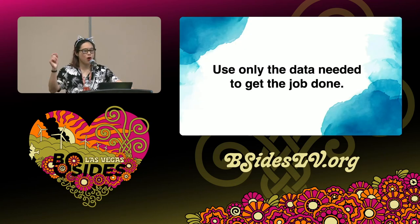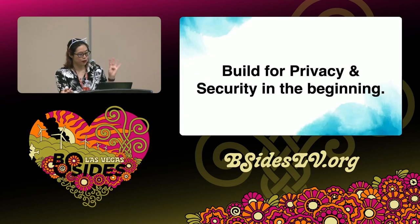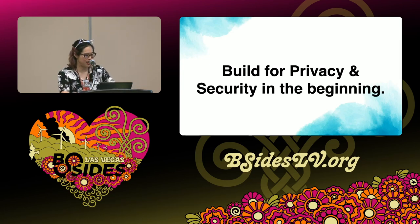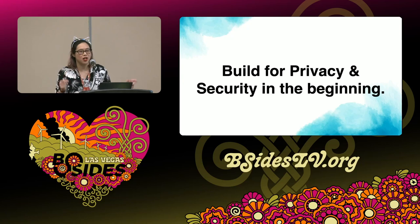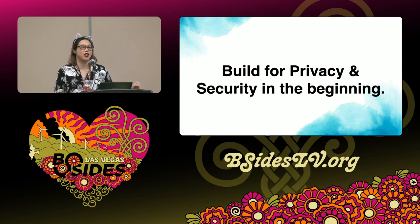Three: use only the data needed to get the job done. Advocate to be incredibly selective about the data that will get processed and shared, because we want to make it harder for re-identification attacks to succeed. Four: build for privacy and security right from the beginning, because it's never cheaper, less effort, or faster to bolt it on later. And if you try to force it in later, you may end up building mission-critical systems that then have to be materially changed or retired because they are privacy law violations.